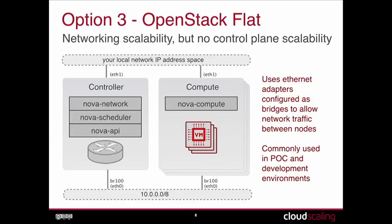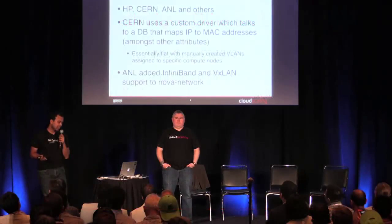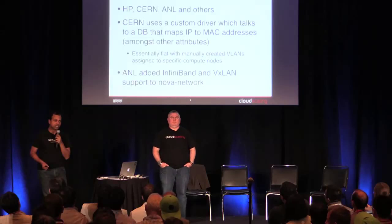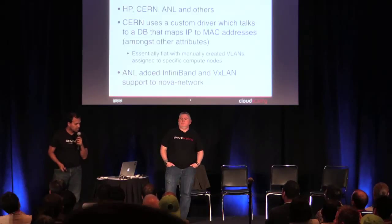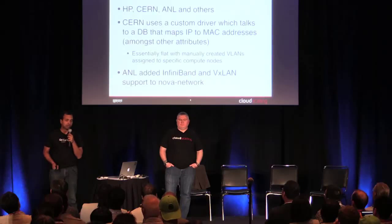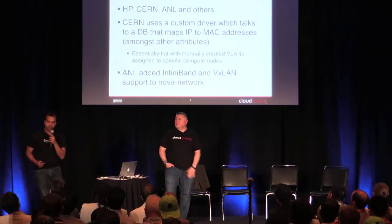We didn't like these networking models in OpenStack and had to come up with something of our own that scales well and meets customer needs. We looked at what others have done. CERN uses a custom driver for Nova Network with a flat database of IP-to-MAC mappings for all networks. ANL added InfiniBand and VXLAN support to Nova Network to increase throughput. Given that information, we were ready to design our own network architecture on top of Nova Network.